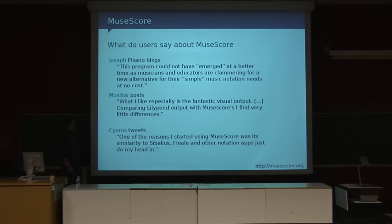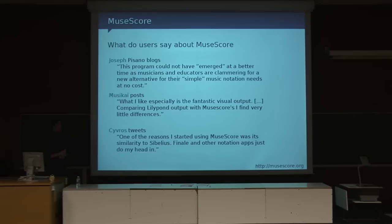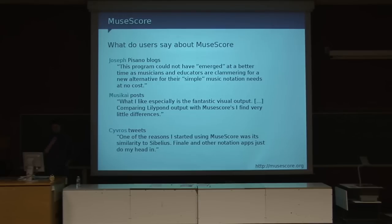The second testimonial was mainly looking at quality output. Lots of you will probably know LilyPond, which is also a score typesetter program on Linux as well as Windows and Mac. LilyPond users are used to the high quality output of LilyPond. Since MuseScore uses the same font and some of the same basic principles of formatting the score, MuseScore looks great as well. The third one was looking for a program easy to use — he used to be a Sibelius user, and due to the easy handling of MuseScore, he moved over.